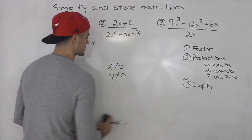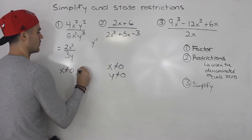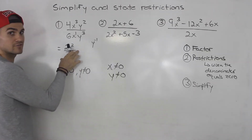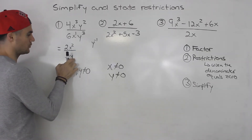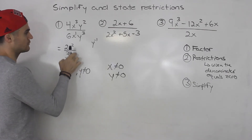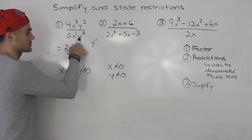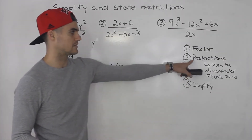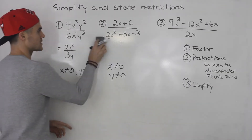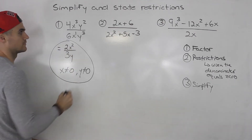The restrictions are x cannot equal zero and y cannot equal zero. Notice that if we tried to get the restrictions after simplifying, we would only find y cannot equal zero, because there's no x variable left. But you have to include x because you always state restrictions from the original expression before simplifying. That's why the restriction step comes before simplify. That there is the final answer.